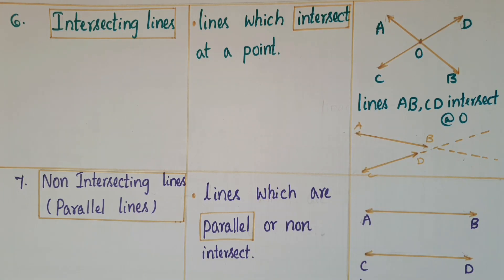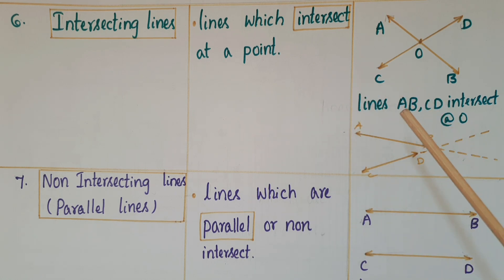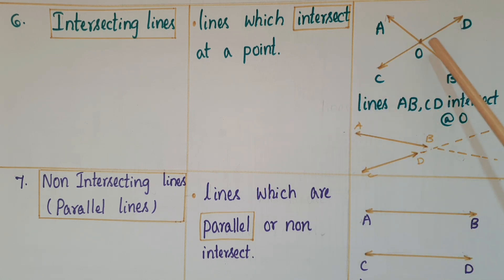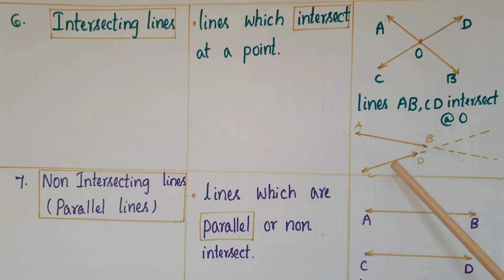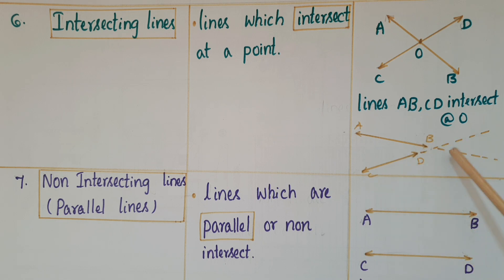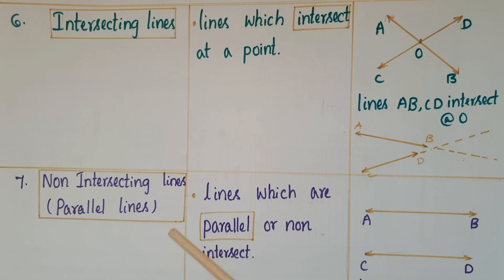Next one is intersecting lines. Lines which intersect at a point are called intersecting lines. Here, AB and CD intersect at a point, so these are intersecting lines. If you observe these two lines AB and CD, they are not visibly intersecting, but if you extend these two lines, they intersect at a point, so these are also intersecting lines.